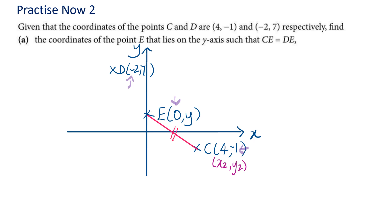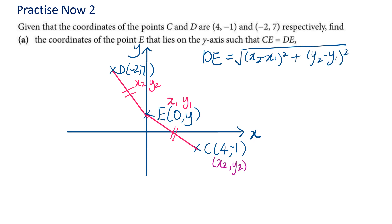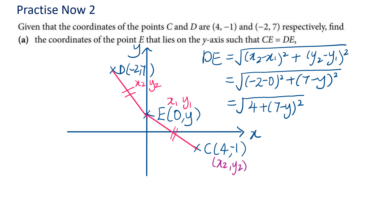Draw a line segment joining E to C, and another joining E to D — these two must be equal. Label the points and write down the formula to find DE. Substitute: x2 = −2 (bracket it), minus 0, close bracket, squared, plus bracket, 7 minus y, close bracket, squared. The calculator simplifies (−2 − 0)² to give 4. The (7 − y)² part cannot be simplified further, so leave it.